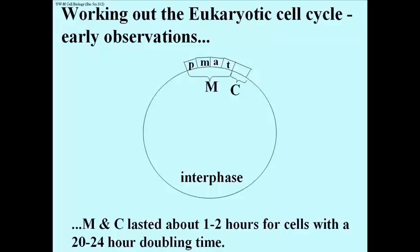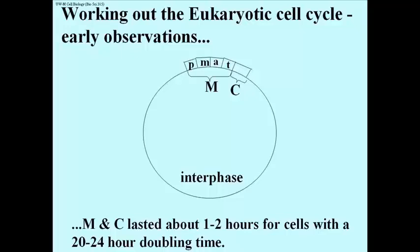That's a very short time in the life of a cell. Most of the rest of the time of a eukaryotic cell is spent in the phase between successive mitoses. Simple microscope observations by very patient observers showed that mitosis and cytokinesis last about 1-2 hours, for cells that might have a 15-24 hour doubling time.